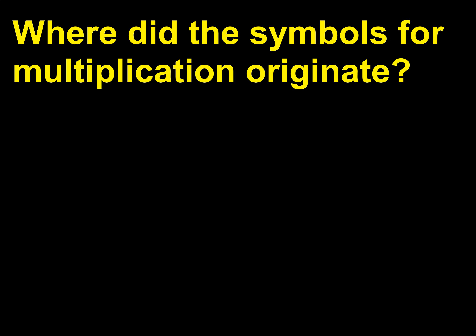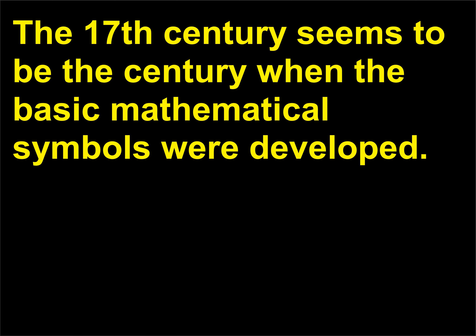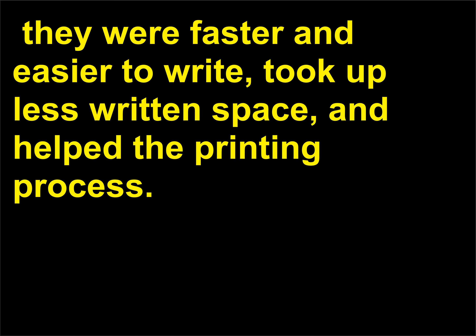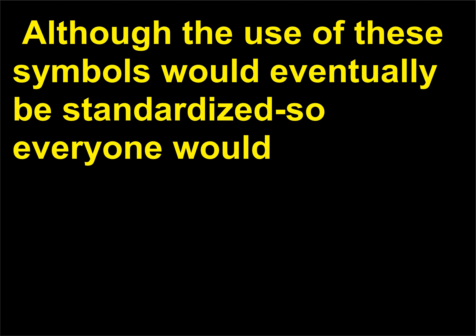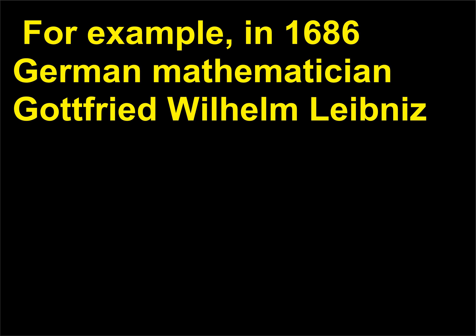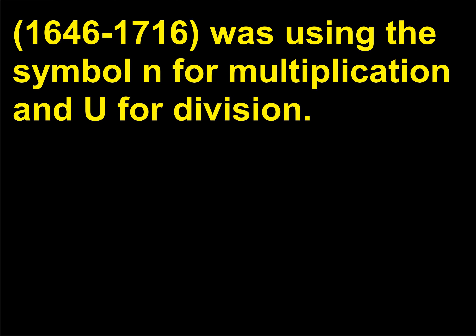Where did the symbols for multiplication originate? The 17th century seems to be the century when the basic mathematical symbols were developed. The best reasons for their development make sense: they were faster and easier to write, took up less written space, and helped the printing process. Although the use of these symbols would eventually be standardized, it took a while. For example, in 1686 German mathematician Gottfried Wilhelm Leibniz, 1646–1716, was using the symbol N for multiplication and U for division.